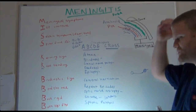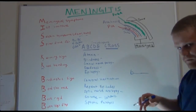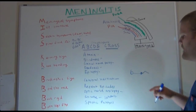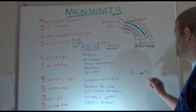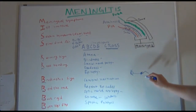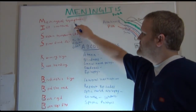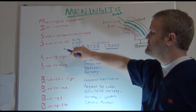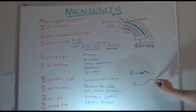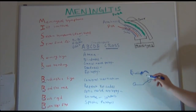Brudzinski's sign — remember BBBB: Brudzinski's, Bend the neck, Back rigid, Both legs flex. The patient is lying down, you manually lift their neck, and as you do that they're going to flex at the hip and bend their knees up. So: Kernig's sign — pull the leg up, knee bends. Brudzinski's sign — bend the neck, back rigid, both legs flex. Meningeal symptoms overall: increased ICP, septic symptoms, spinal fluid changes, Kernig's sign (knee bending), and Brudzinski's sign (bend neck, back rigid, both legs flex).